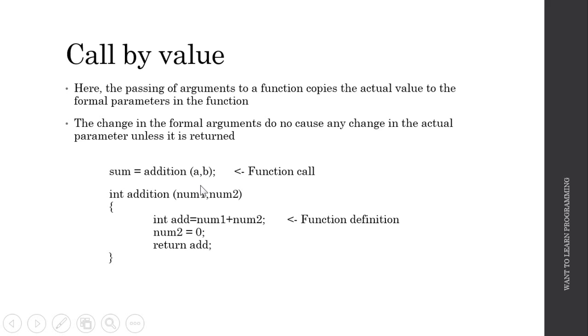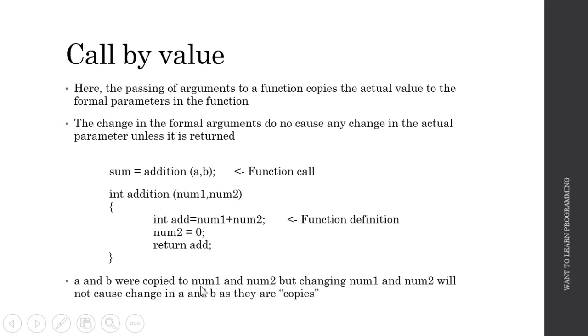For example, if a was 1 and b was 2, then it would add 1 + 2 and return 3, but it would not change the value of b. The value of b will remain as 2. a and b were copied to num1 and num2, but changing of num1 and num2 will not cause a change in a and b because they are copies.